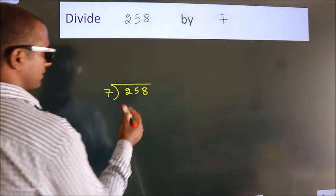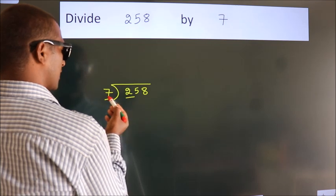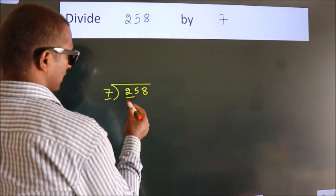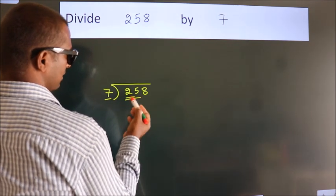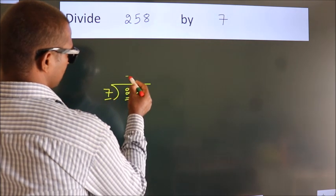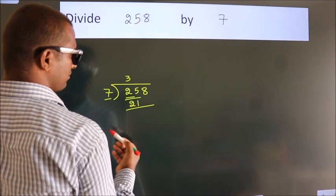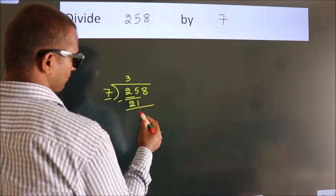Next, here we have 2, here 7. 2 is smaller than 7, so we should take 2 numbers, 25. A number close to 25 in the 7 table is 7 threes, 21. Now we should subtract. We get 4.